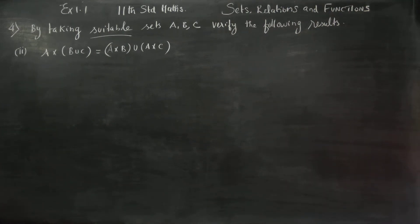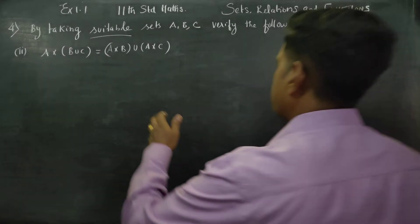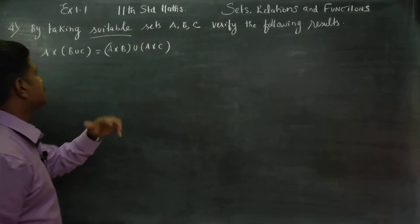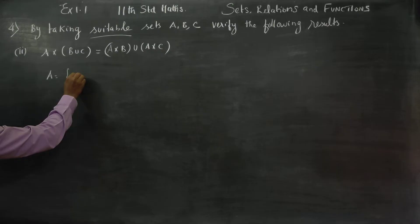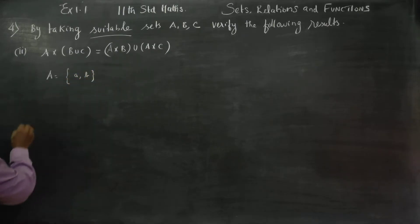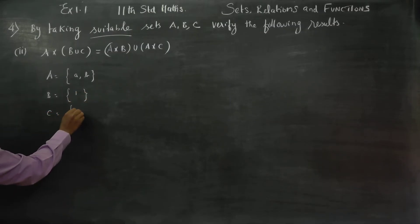Hello 11th standard students, in sum number 4 second subdivision exercise number 1.1, by taking suitable sets A, B, C you can choose your own set. I am choosing A equals {a, b}, B equals {1}, and C equals {2}.